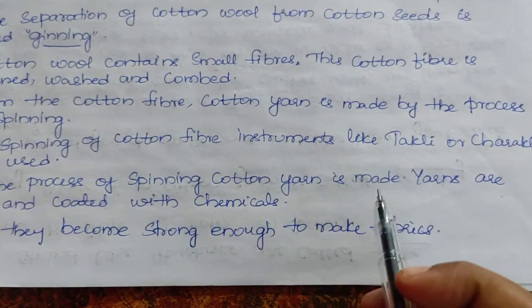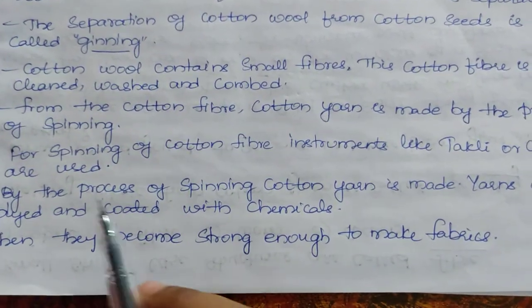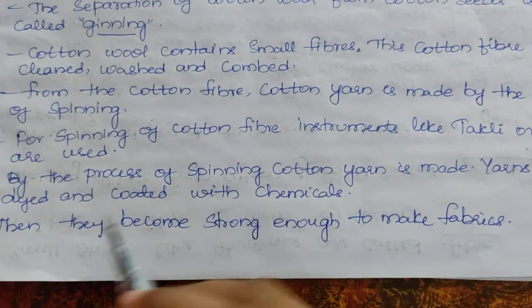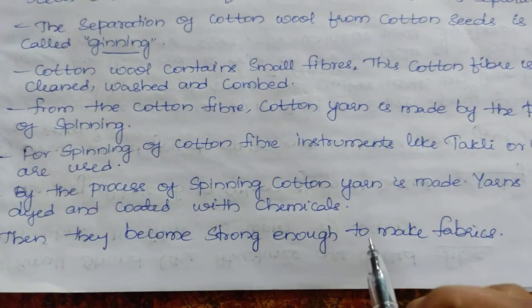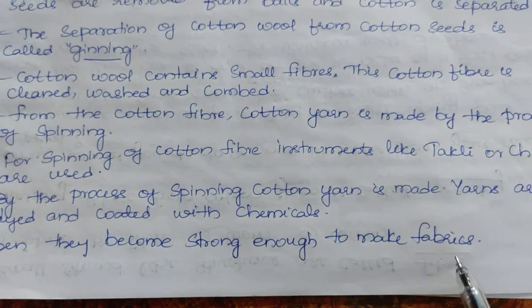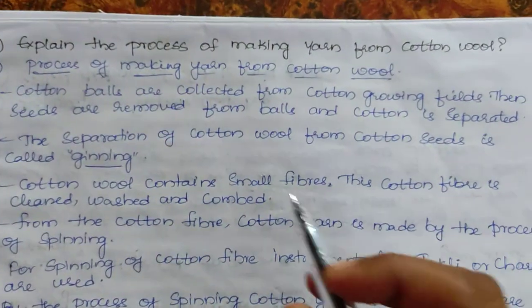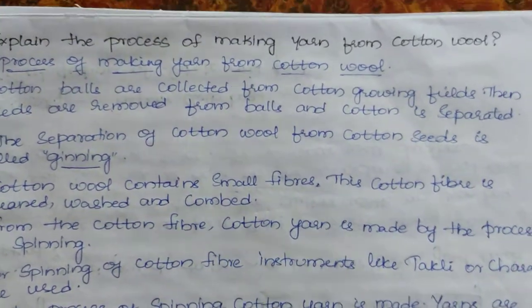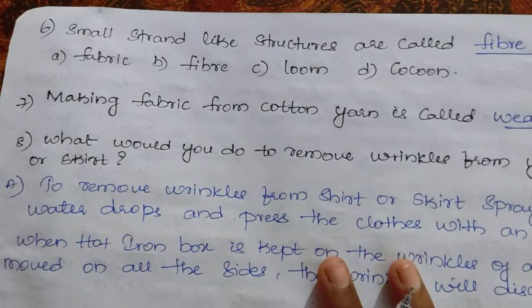From the cotton fiber, cotton yarn is made by the process of spinning. Yarns are then dyed and coated with chemicals, which makes them strong enough to make fabrics. This is the complete process of making yarn from cotton wool.